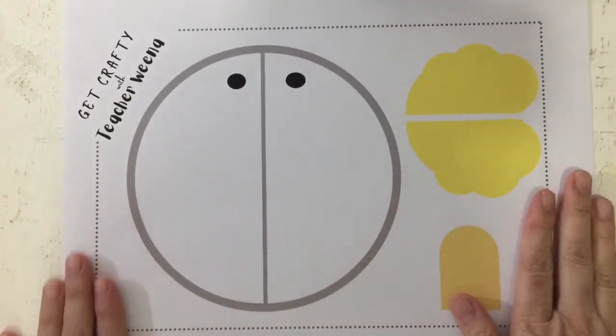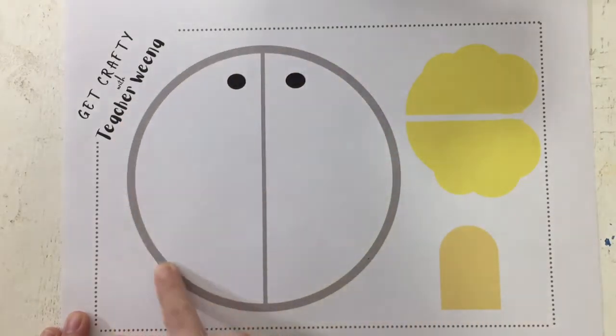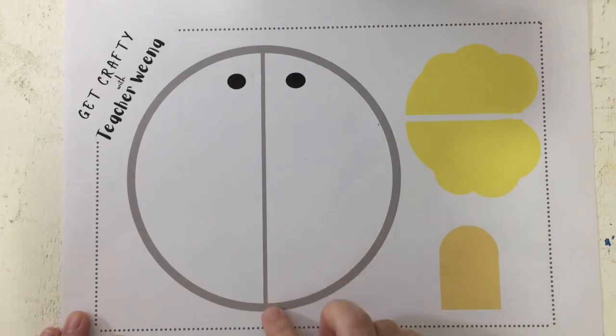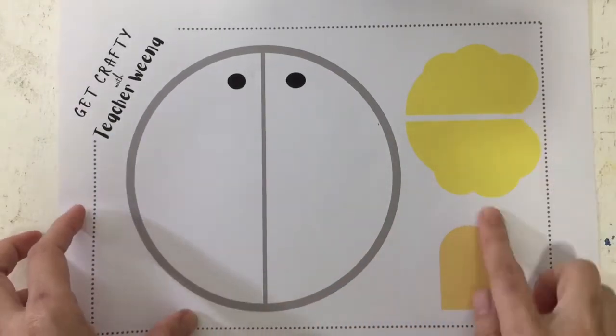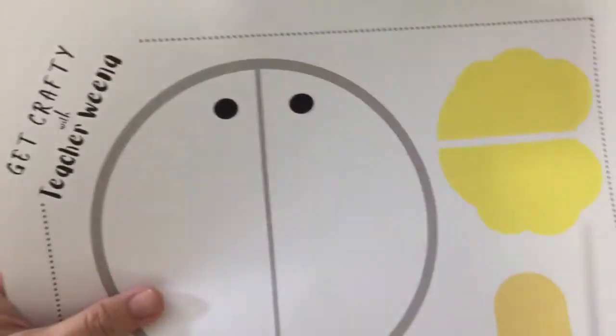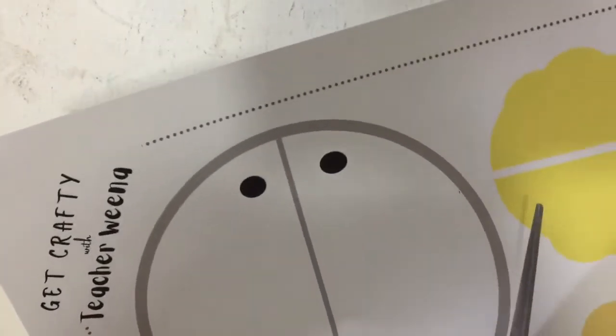For young children, if you are going to cut the circle yourself, please have mom or dad or an adult supervise. For older children, you may cut the smaller pieces yourself. Otherwise, let your parents or an adult do it.